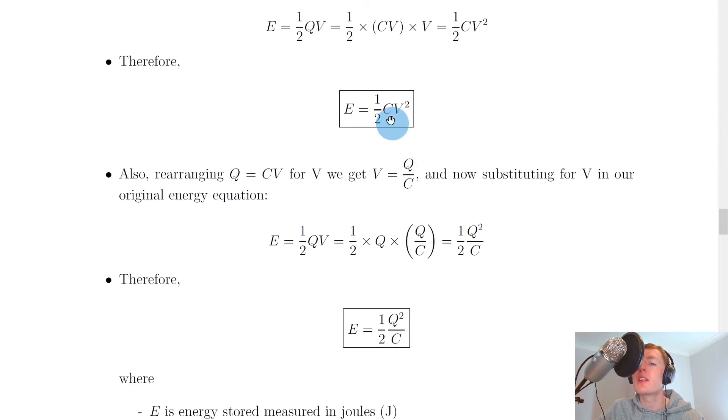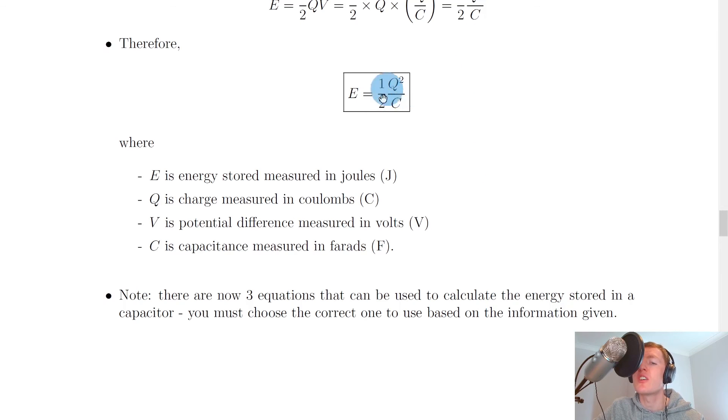If the question gives you a capacitance and a potential difference, then you want to use this one, e equals a half cv squared. And lastly, if a question gives you the charge and capacitance, then you want to use this equation here, e equals a half q squared over c.